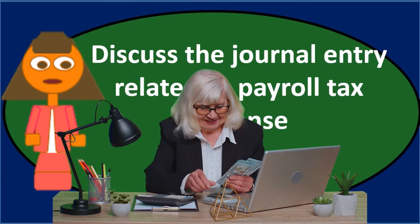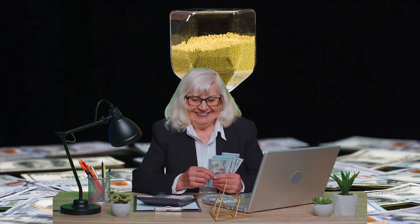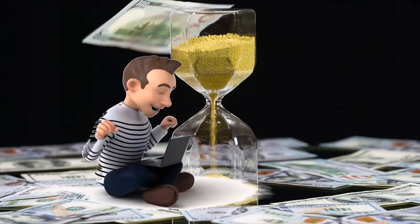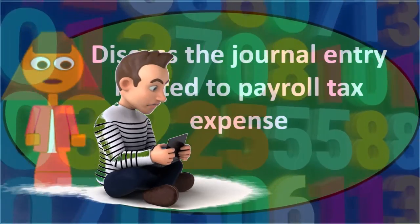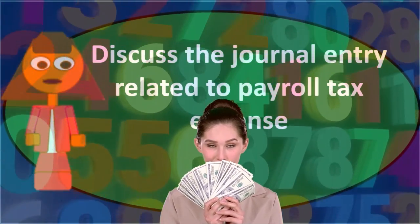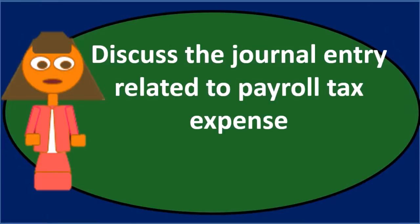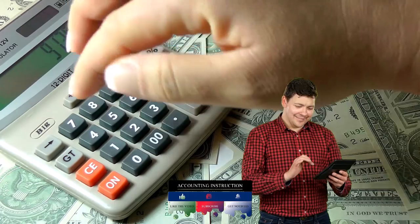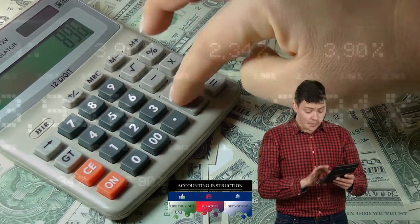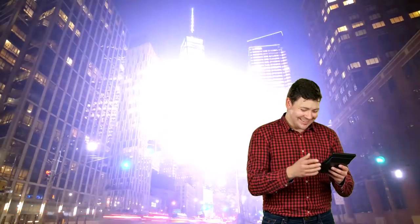When we record this entry, payroll tax expense will go up — expenses increase, decreasing net income, calculated as revenue minus expenses. Liabilities will then increase. The liability for Social Security and Medicare will increase to basically twice what we posted, because at this point we would have already recorded Social Security and Medicare liability for the employee portion, and now we're adding the employer portion. We also post the FUTA liability. All liabilities are now reflected, and we'll pay them on some future date by debiting the liabilities and crediting cash.